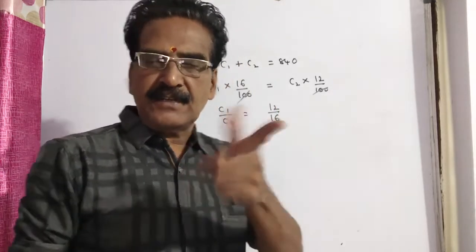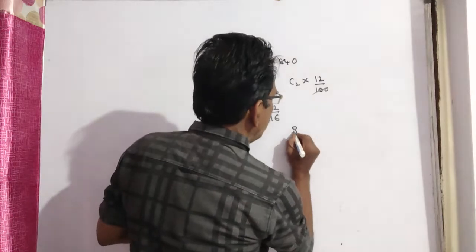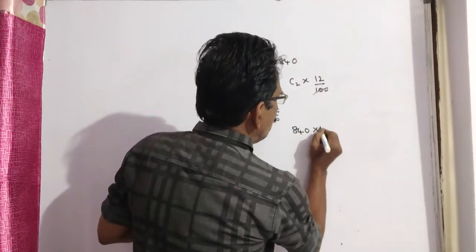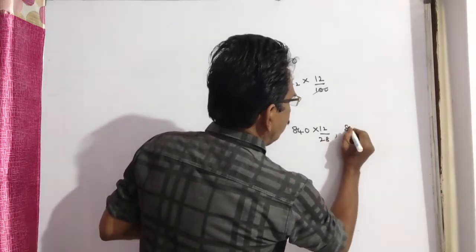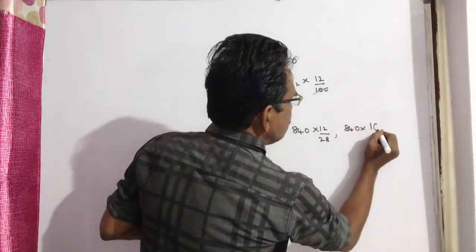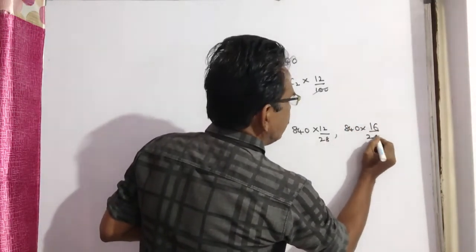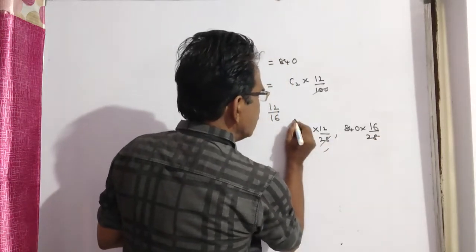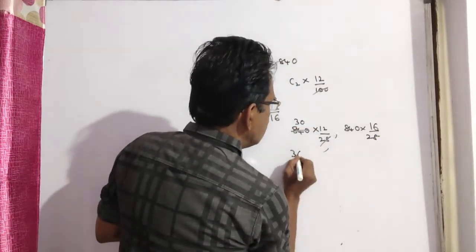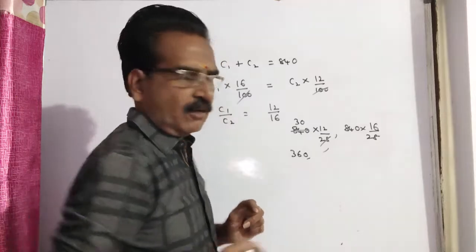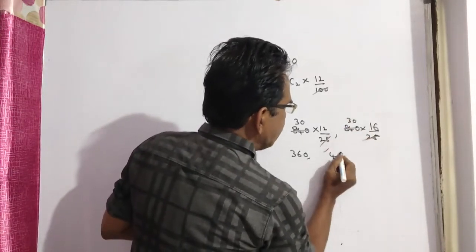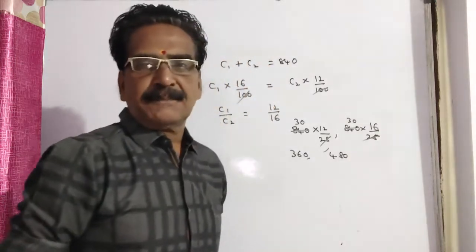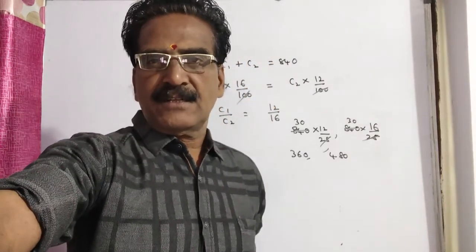840 into 12 by 28, 840 into 16 by 28. 28 times 3 is 84, so 360 is the cost price of one watch and 480 is the second watch. Okay friends, thank you.